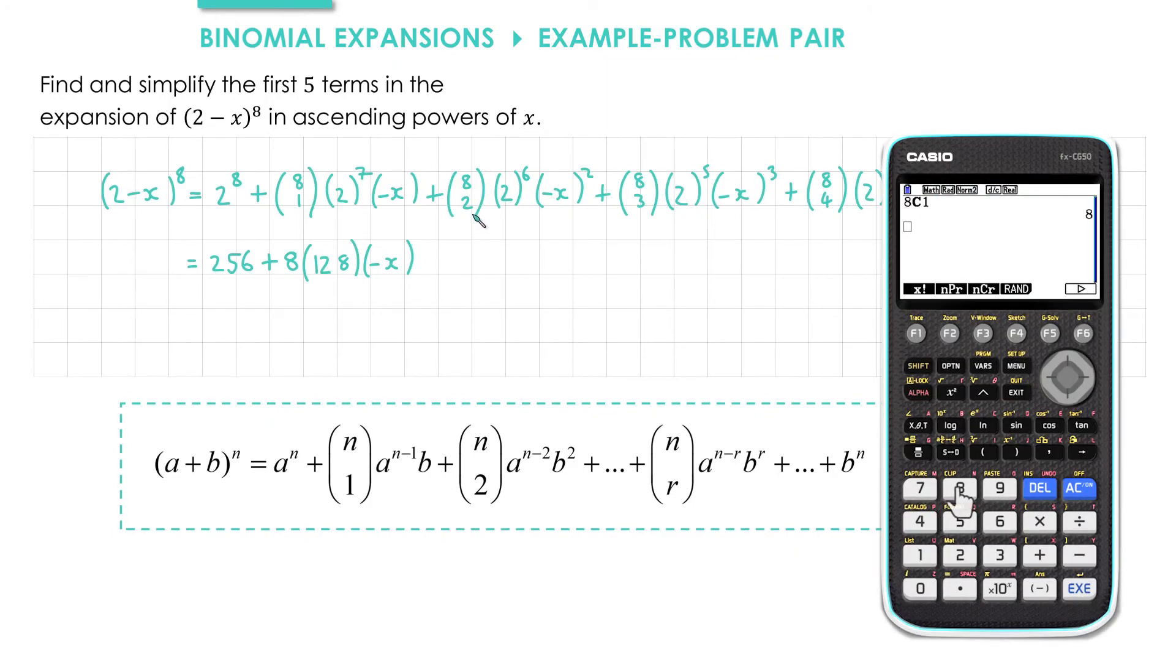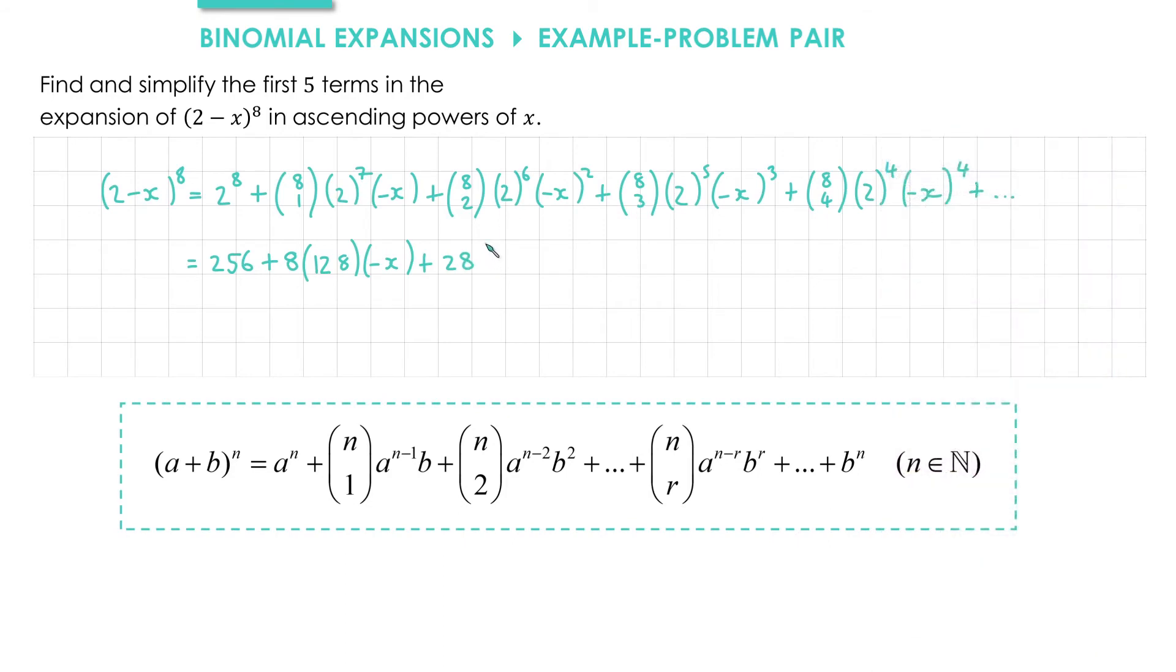8 choose 2, we'll put that into our calculator. That gives us 28. 2 to the power of 6 is 64, and negative x all squared gives us positive x squared.